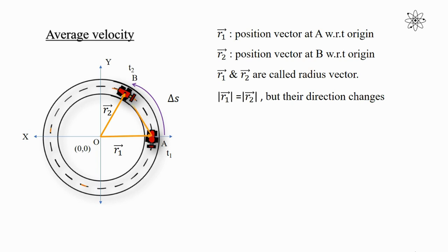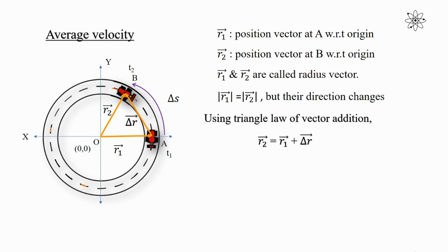Now, joining vector A to B gives us the displacement vector delta r. Since the magnitude of the radius vector does not change, only its direction changes. Therefore, vector delta r is the vector which gives the change in the direction of the radius vector. Using the triangle law of vector addition, we can write: vector r2 equals vector r1 plus vector delta r, which can also be written as vector delta r equals vector r2 minus vector r1.